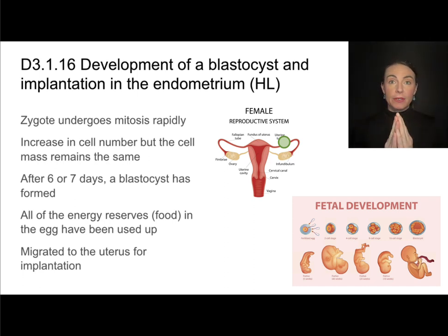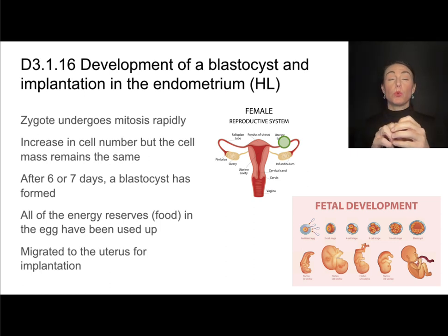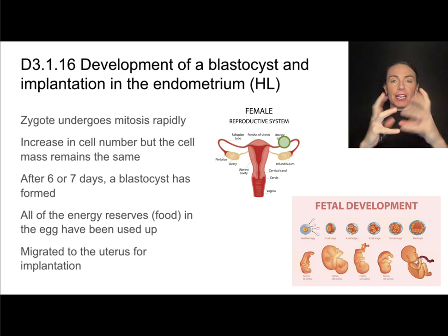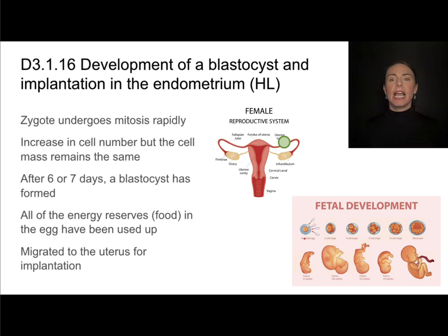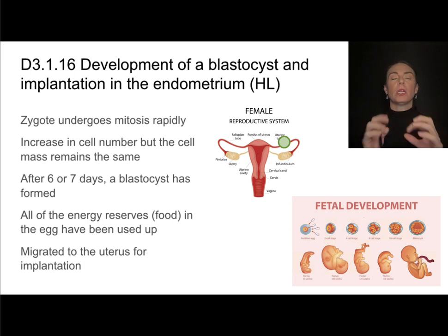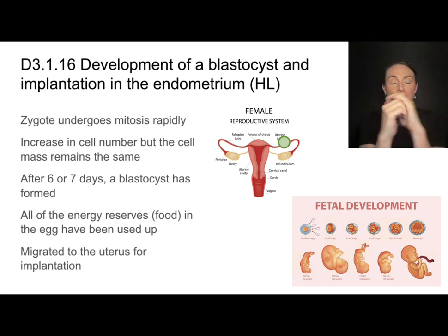Once we have that single cell — the zygote — it is going to rapidly undergo mitosis, making many many copies. We find that it increases in cell number but not necessarily in size. You can see that progression where it's dividing repeatedly, but that ball of cells remains the same size; each cell just gets smaller.